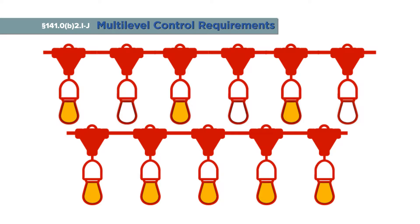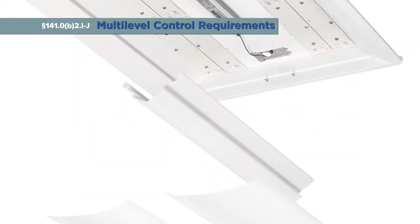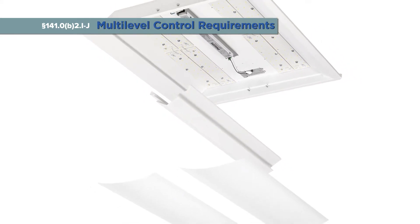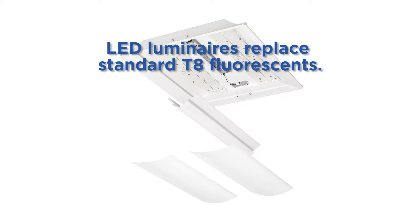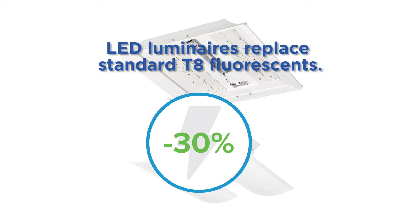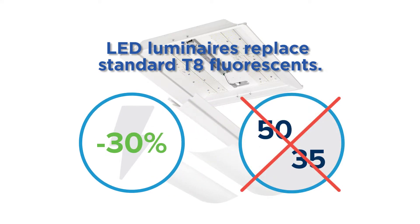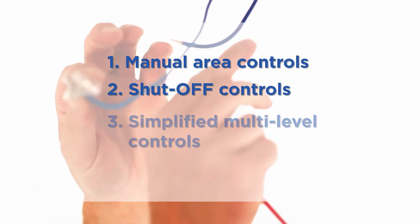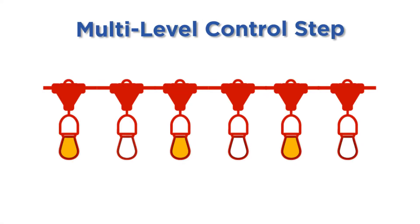Previously, each luminaire was required to have a step between 30% and 70%, which meant installation of dimming ballasts or drivers for each fixture. A qualifying project under this compliance pathway would be one where new dedicated LED luminaires replace standard T8 fluorescents. The rated power reduction is 30%, so the project cannot take the 50%-35% power reduction compliance path. However, the new lighting power is less than 85% of the lighting power allowance per section 140.6. This project must include manual on-off controls, shutoff controls, and a simple multi-level control scheme. In this example, the multi-level control step applies to the space as a whole, so controls may switch alternate luminaires or groups of luminaires — each luminaire is not required to have individual multi-level control.